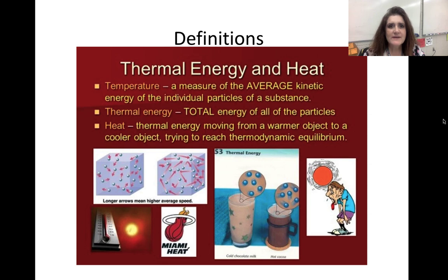Temperature doesn't just affect our bodies — it can dramatically affect our moods. Heat can make people do crazy things; there are more violent crimes in the summer than in any other season. So what is thermal energy, heat, and temperature? Temperature is the measure of the average kinetic energy of the individual particles of a substance. Thermal energy is the total energy of all of the particles. And heat is the thermal energy moving from a warmer object to a cooler object, trying to reach thermal equilibrium.